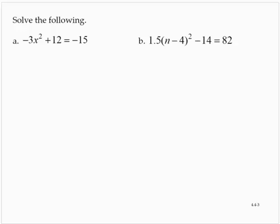Negative 3x squared plus 12 is equal to negative 15. We are asked to solve the equation. So the first thing I will do is isolate the variable quantity by subtracting 12.